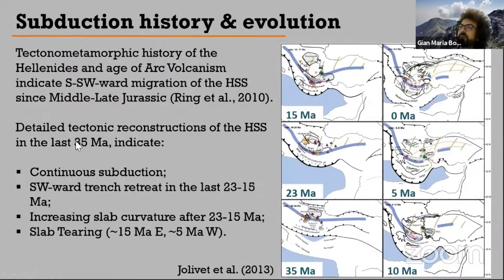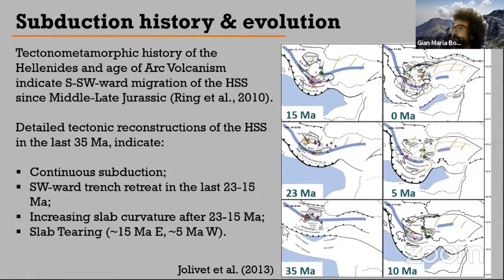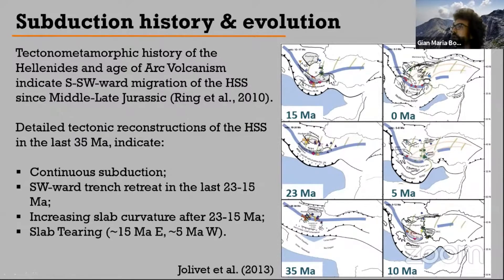I focus on the last 35 million years using the reconstruction proposed by Jolivet et al. in 2013. At 35 Ma, around the time the Pindos Ocean closed, the trench was nearly straight, as was the slab — represented here by the 100 km slab reconstructed from the volcanic arc position. By 23 to 15 Ma, oceanic lithosphere still subducting today began entering the subduction zone. Trench curvature increased, the slab began migrating southward, and at 15 Ma a discontinuity appeared in the slab between Turkey and the Aegean.